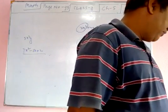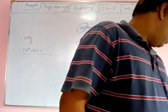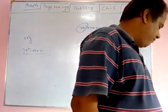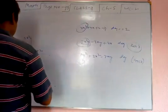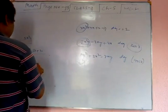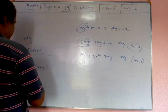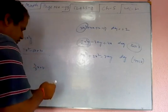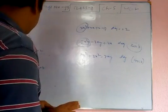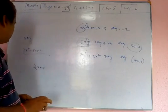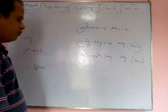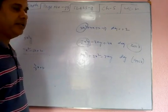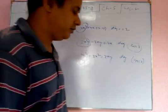Number c: 3/5x plus 7. There are 2 terms, so this is a binomial. The highest degree is 1, so this is a linear polynomial.